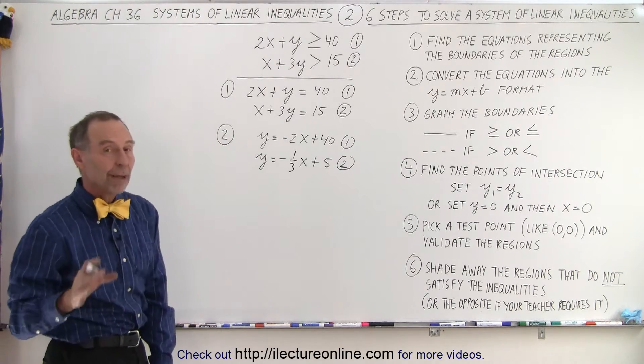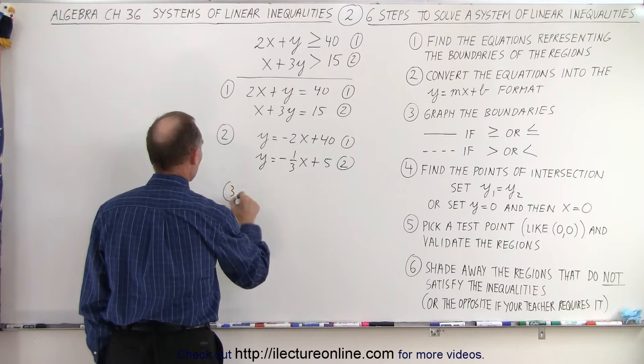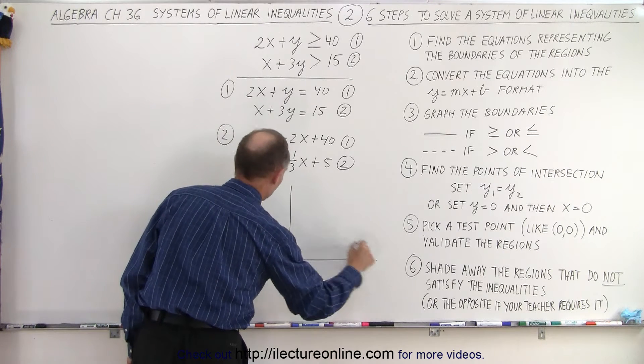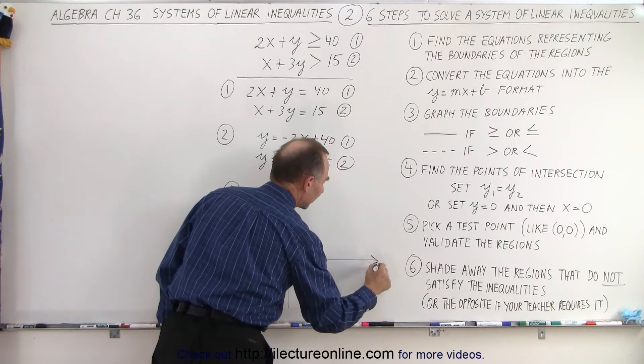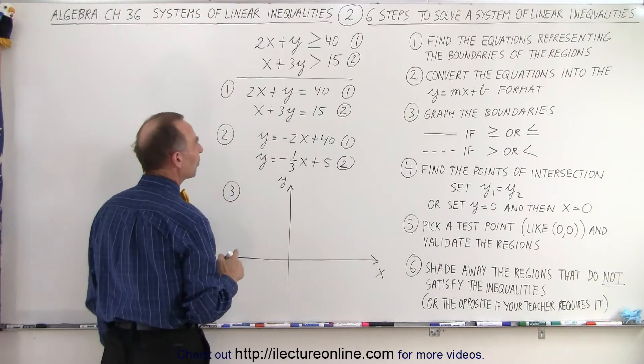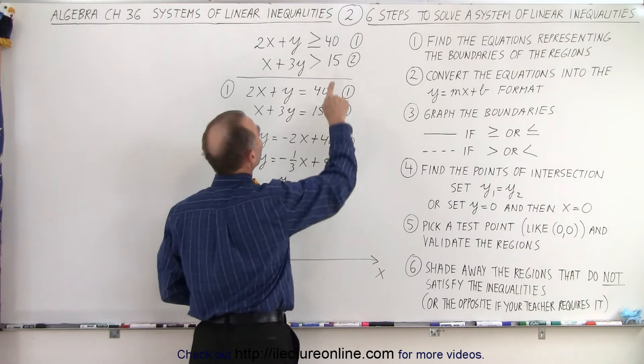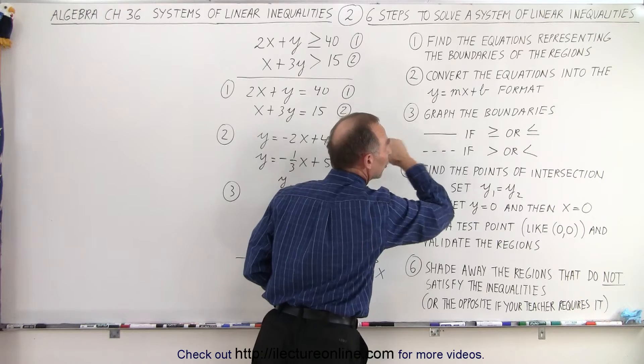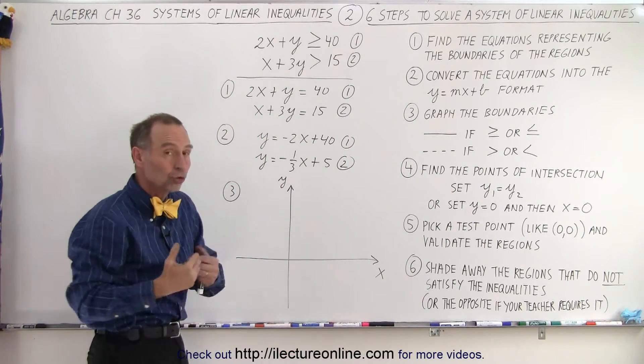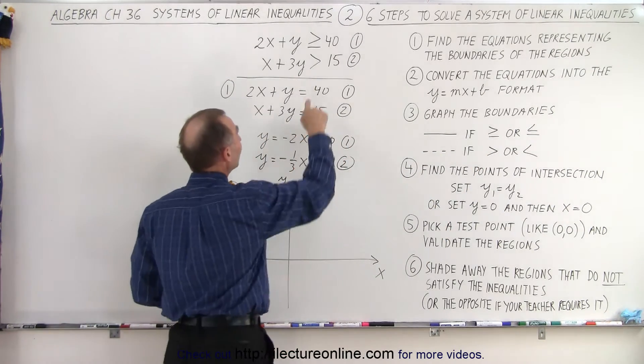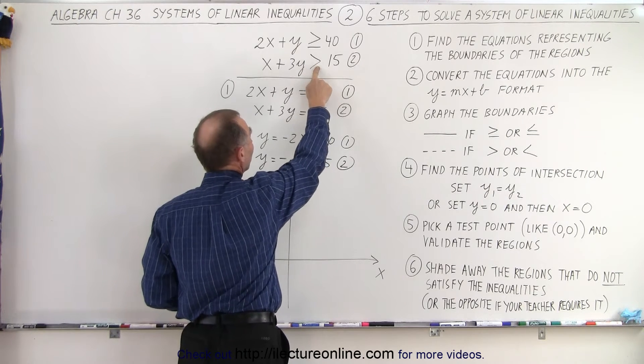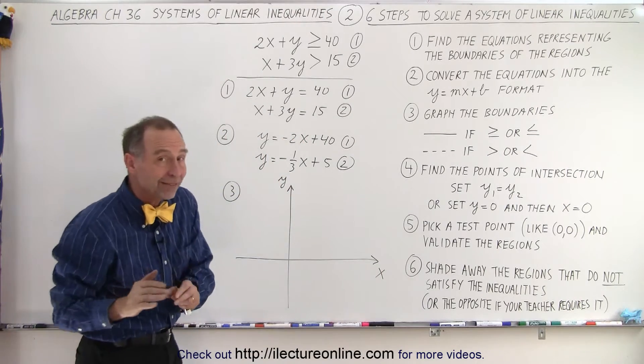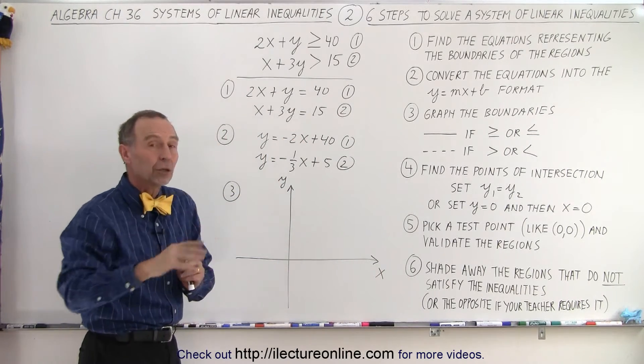All right, now we're ready to graph the boundaries on the xy plane. So step number three, we draw the xy axis. Here's our y axis. There's our x axis and now we can graph them. But notice that if the original inequality had a greater than or equal to or a less than or equal to, you want to draw the boundary with a solid line because it includes the boundary. If it doesn't have the equal sign, simply just a greater than or smaller than, then you draw a dashed line because that means that the boundary is not included in the solution.